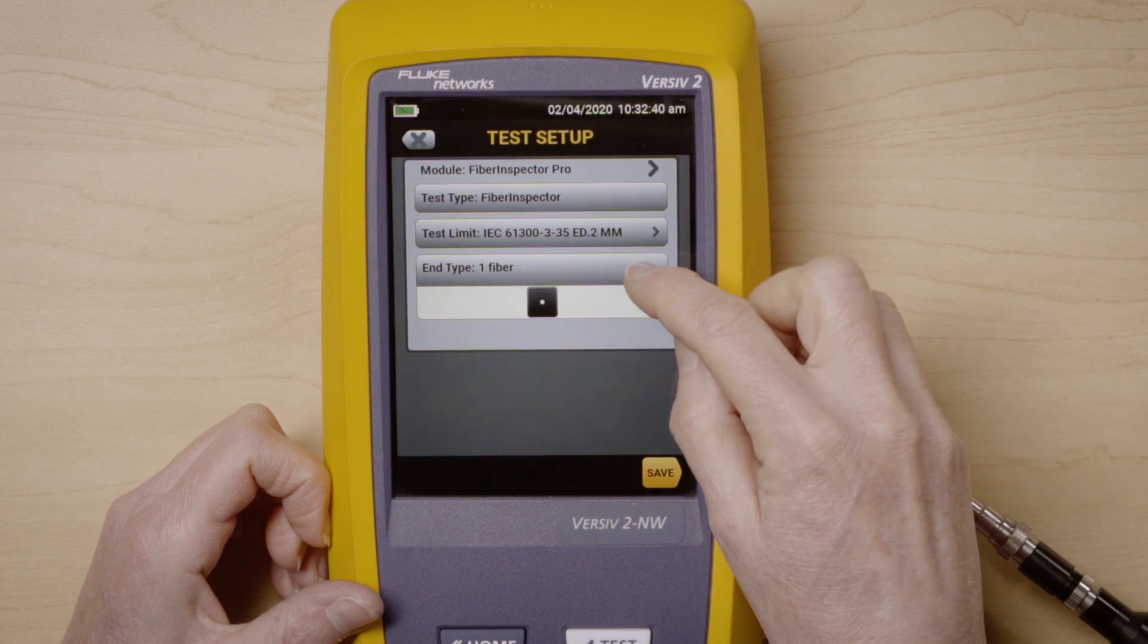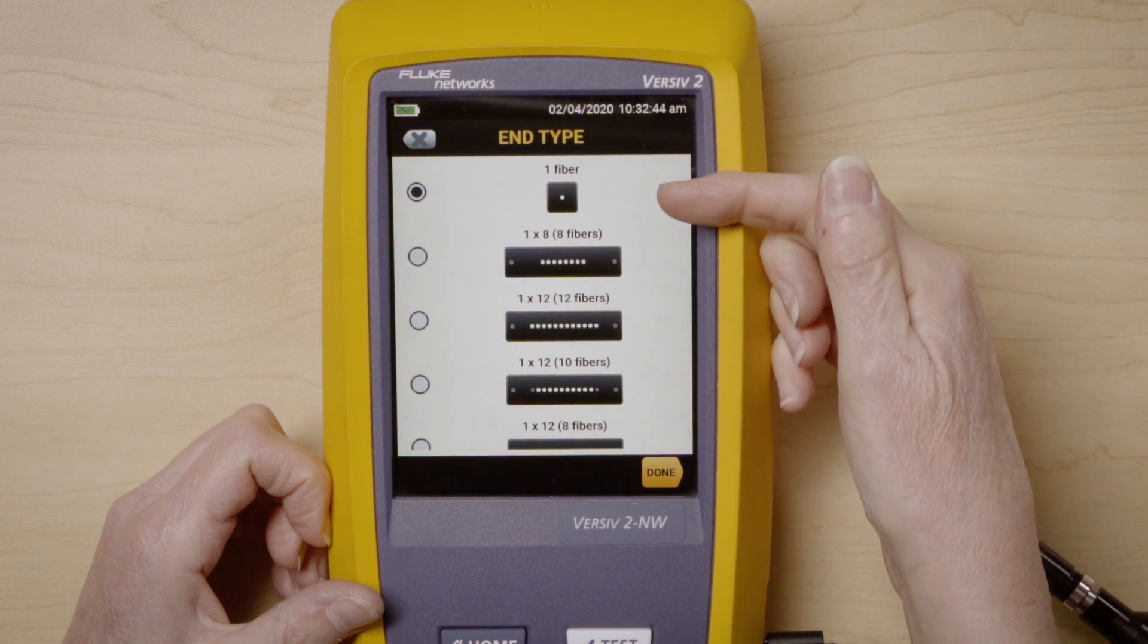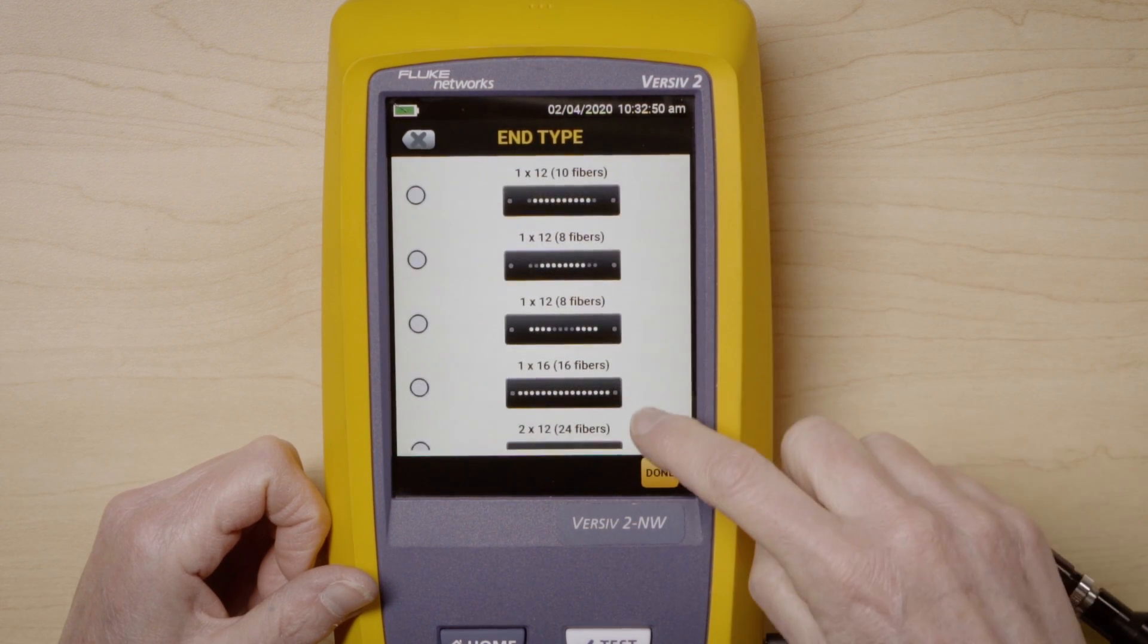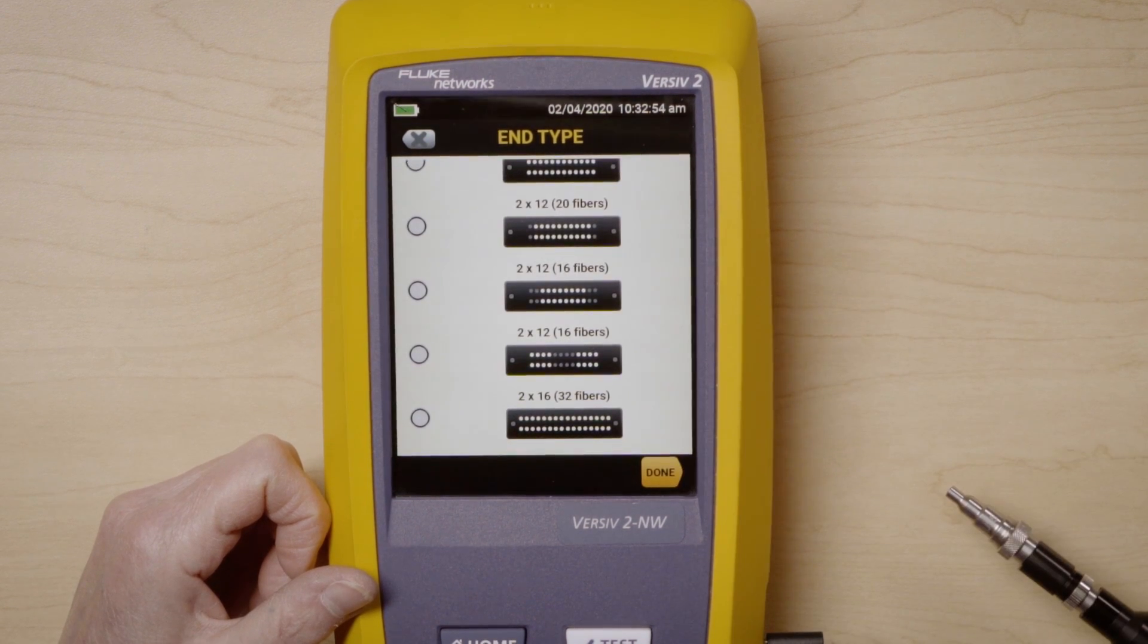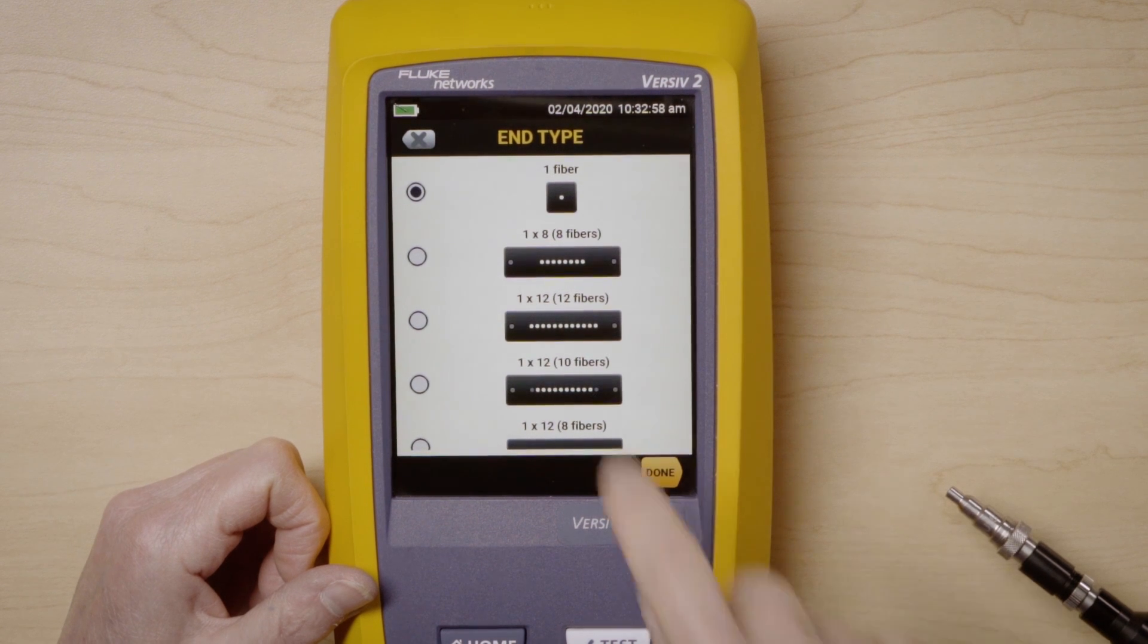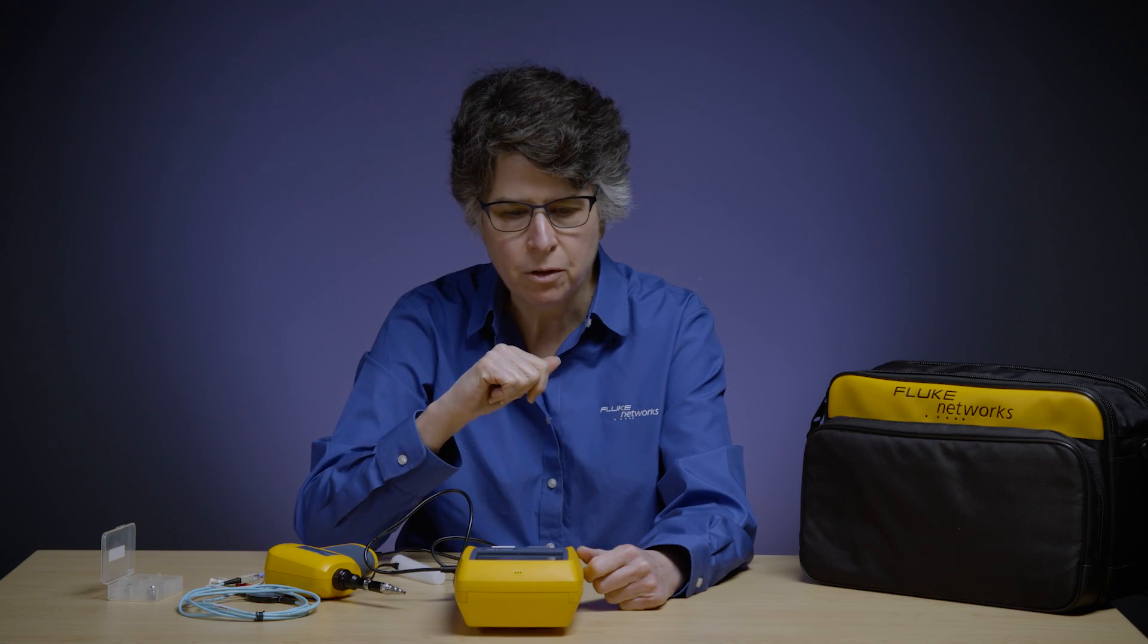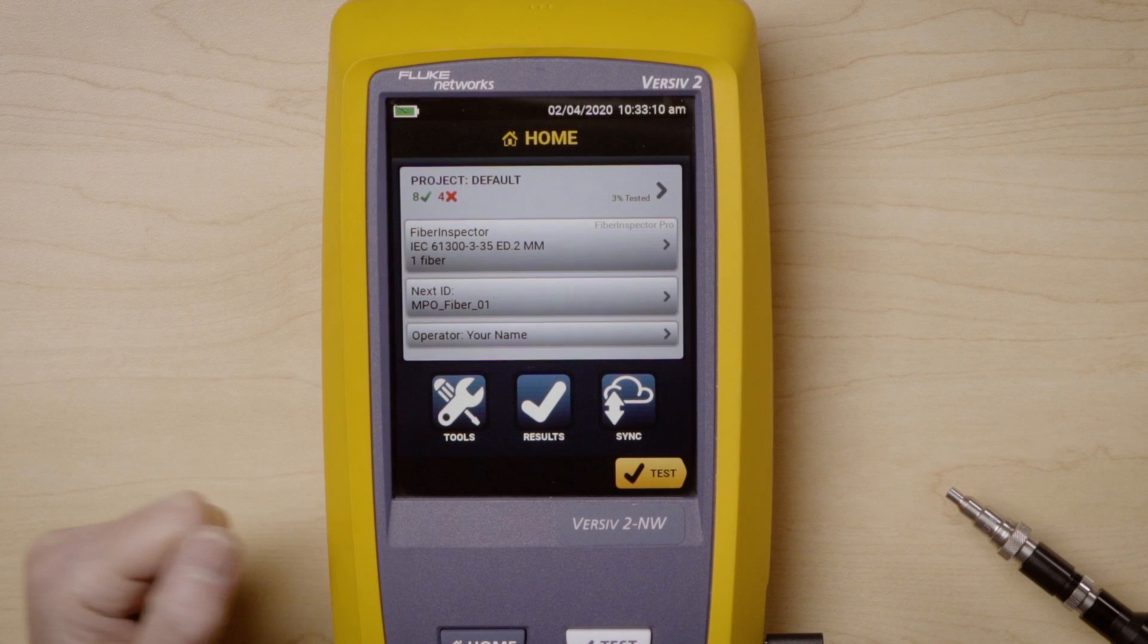You also then have a selection of the fiber end type. We have single fiber for single fiber inspection, one fiber. Or if you're doing MPO, you have all the different MPO from 1.8 all the way down to 2x16 or 32 fibers. But today, since I'm doing single fiber, I do want to make sure I'm selecting the one fiber. Simple. Just say done. That's all there is to it. I'm going to press save and say use selected and I'm ready to go.